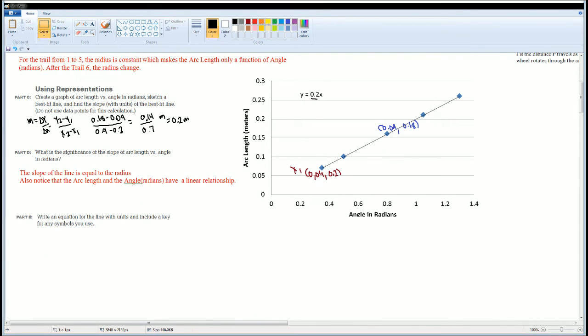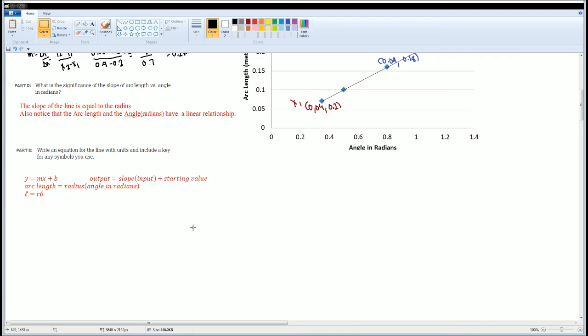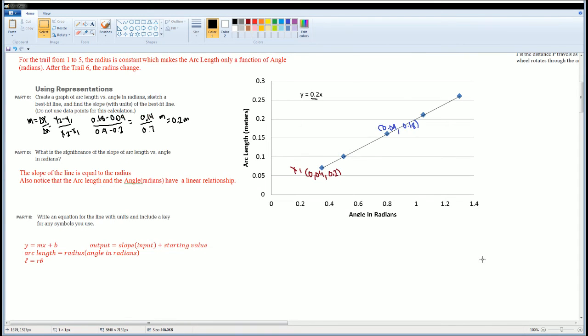The next part, you want to write an equation. Again, this is a linear relationship, so you should know the equation for a line. Hint: it is y equals mx plus b. Pause the video and try to do part E. Okay, so y equals mx plus b can be described as the output equals the slope times your input plus the starting value. In this case, it behaved the same exact way: the arc length equals the radius times theta.